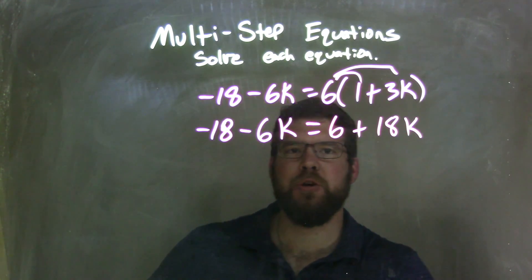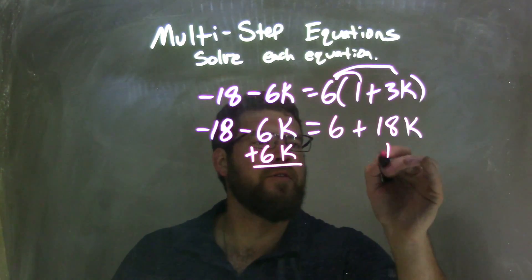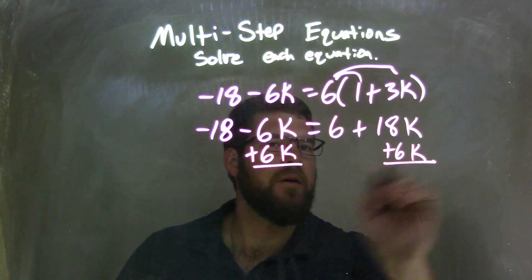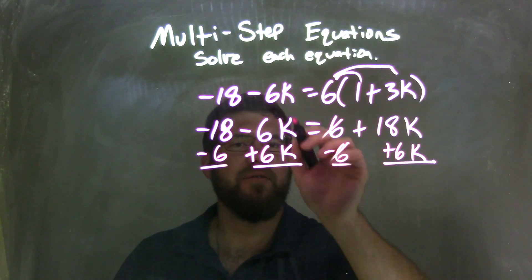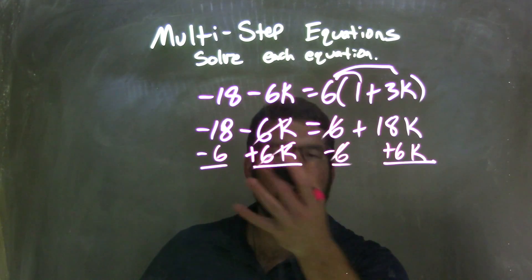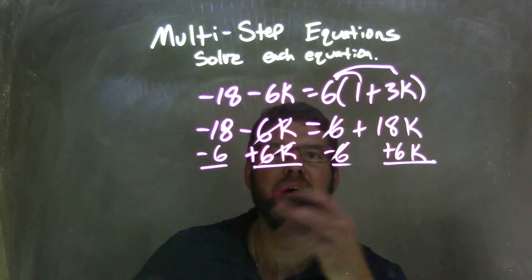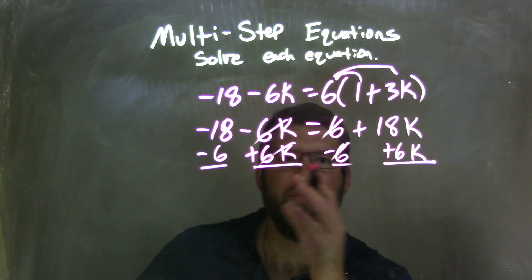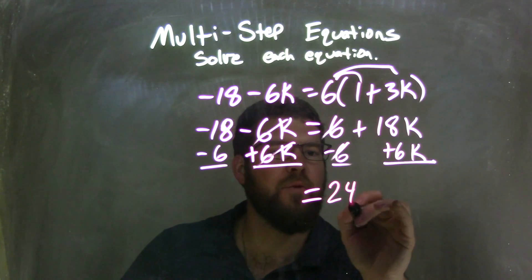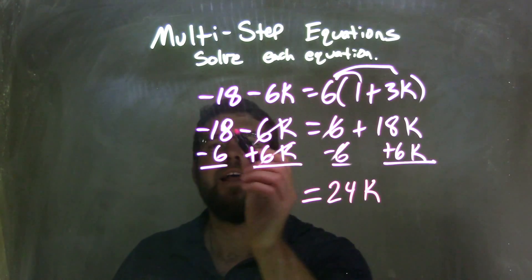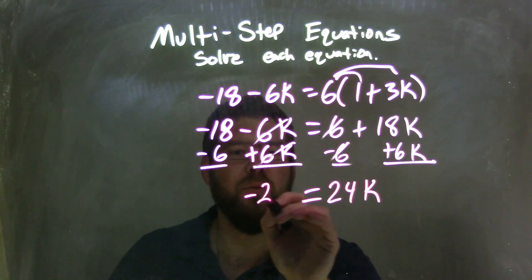Now I'm going to combine my like terms. I'll add 6k to both sides here and subtract 6 from both sides there. These 6s will cancel, and these 6ks will cancel. That's the whole point - we pick those numbers to add or subtract to both sides because it will eliminate that variable or number on each side. 18k plus 6k is 24k, and negative 18 minus 6 is negative 24.